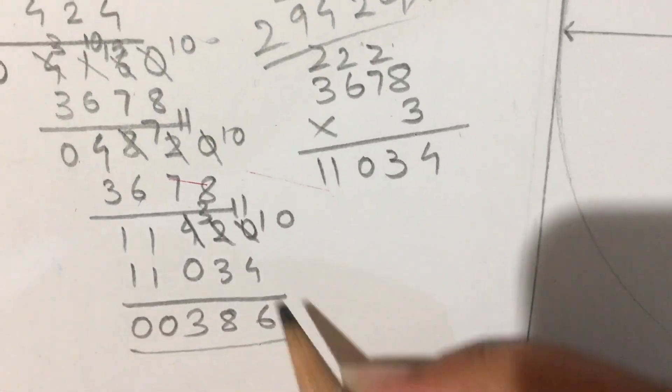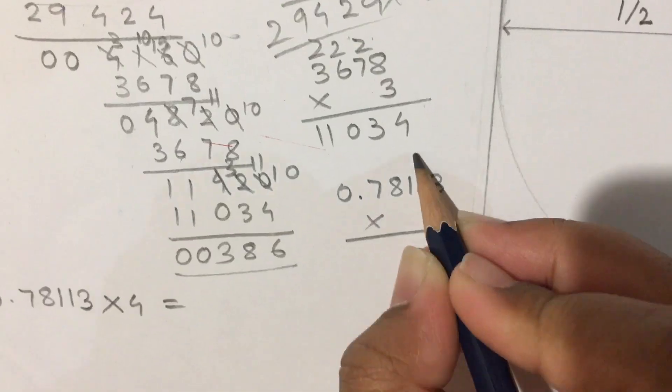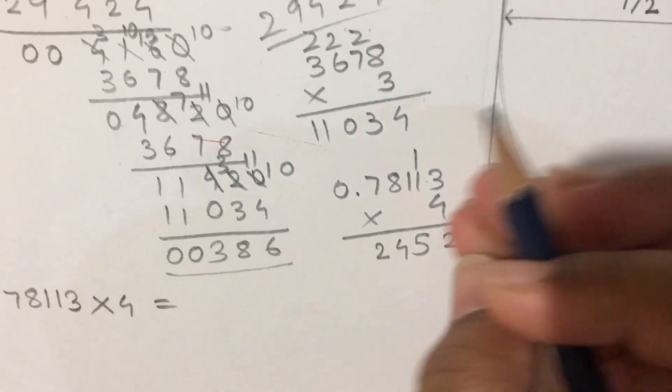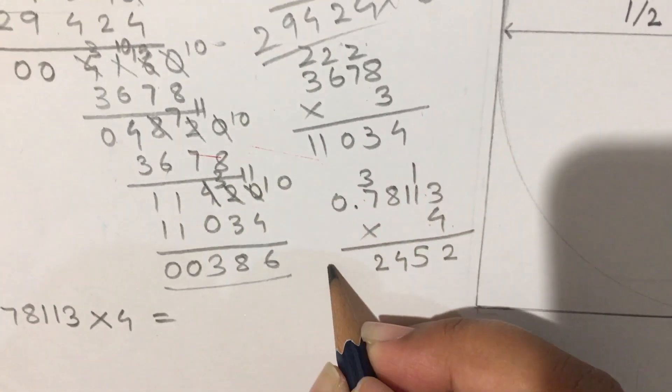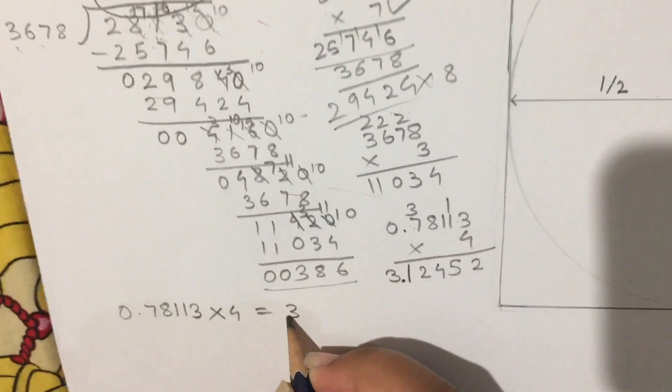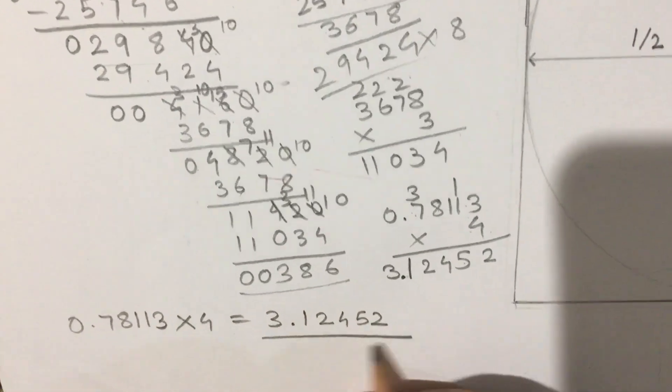And now we just have to multiply the quotient by 4, and now we get pi: 3.12452.